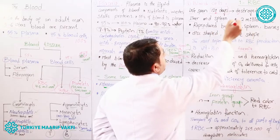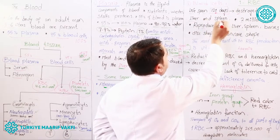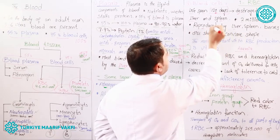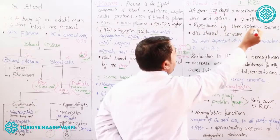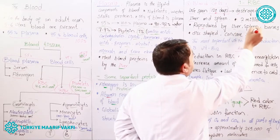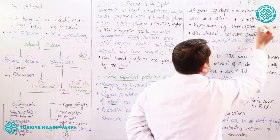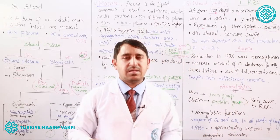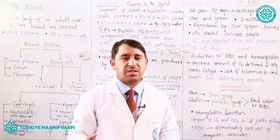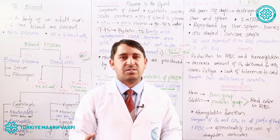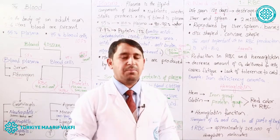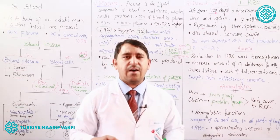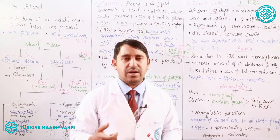RBCs are both destroyed and reproduced by the liver and spleen. Besides the liver and spleen, RBCs are also reproduced in our bones — specifically in long bones like the sternum, ribs, femur, humerus, tibia, and fibula. In these bones, we have red bone marrow, which can produce RBCs.